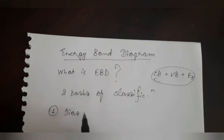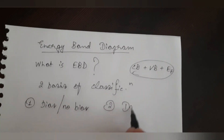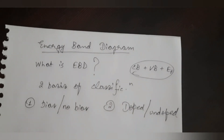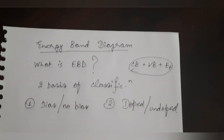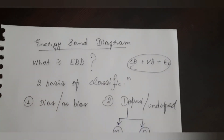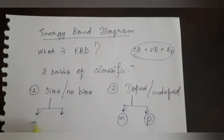So what is an energy band diagram? It is a diagram in which we plot different energy levels like conduction band, valence band, and the Fermi energy level. I have decided to explain this concept using two bases of classification: first, can be bias or no bias — that is, applied voltage or battery — and second, what kind of doping is there: undoped, doped, or heavily doped.